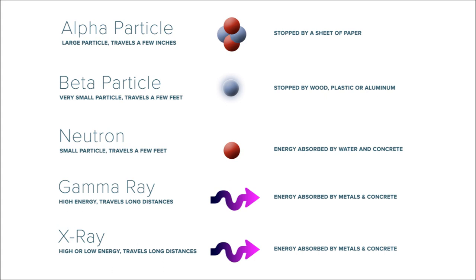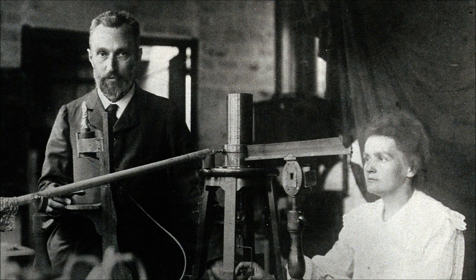If the repulsion of the protons is too strong to be countered by the strong force, the atom can decay in three different ways. The first, alpha decay, is an emission of two protons and two neutrons. Beta decay is an emission of an electron or positron due to either protons or neutrons being transformed into the other, and gamma decay is an emission of energized photons. The speed at which a given amount of a radioactive substance decays is given by the half-life of the substance — the time after which half of the substance will remain, and half of the substance will have turned into something else.